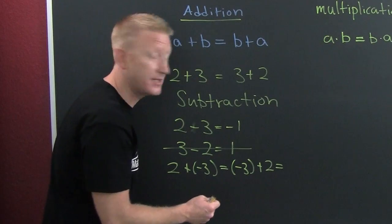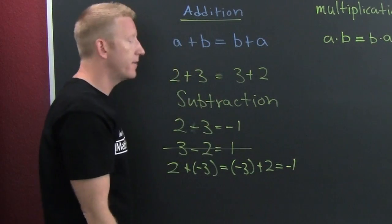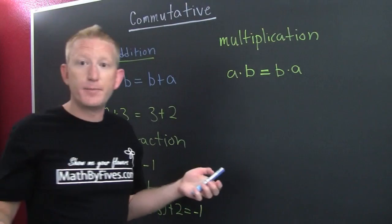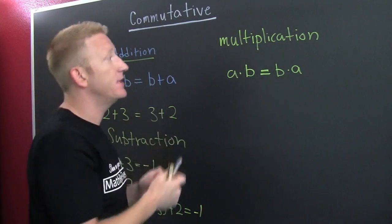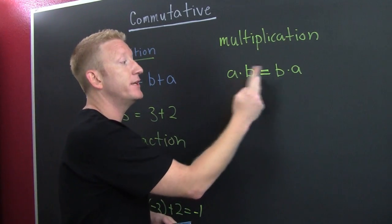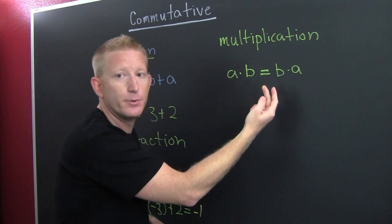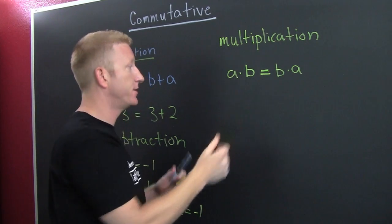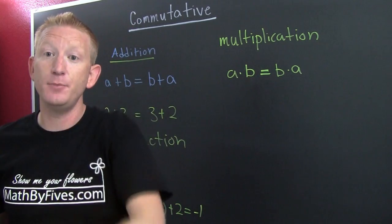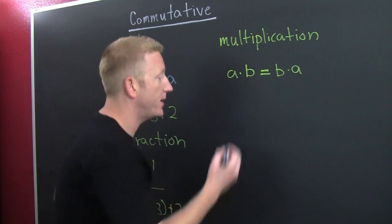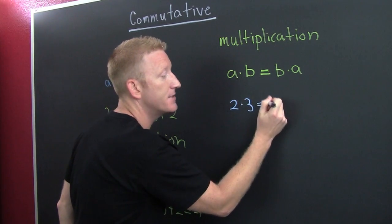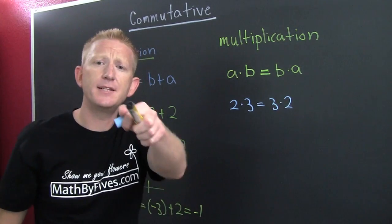So then we go over to multiplication. We're talking about the commutative property of multiplication. The commutative property is when we actually commute them, when we move them. We're going to commute these guys. What am I saying? I'm saying two times three is the same as three times two.